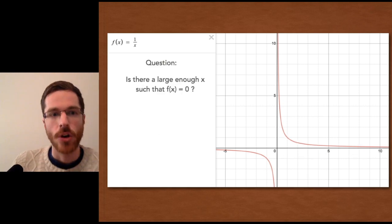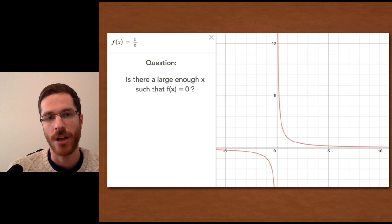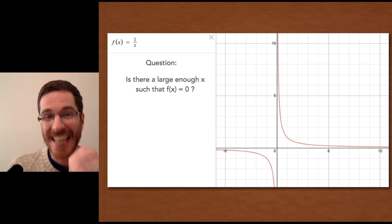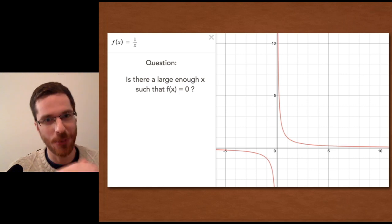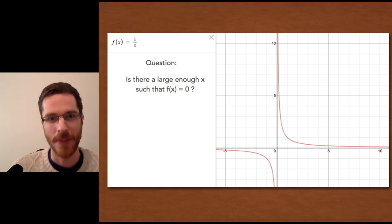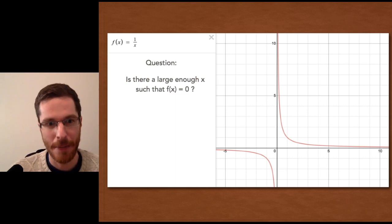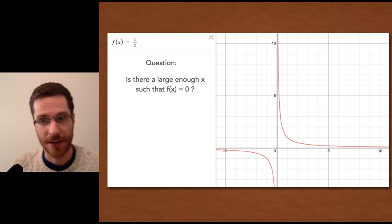So here's a question. Could there be a large enough x such that f(x) equals zero? It doesn't approximate zero, we're going to use equals in the strict logical sense. But there is an identity between f(x) and zero.